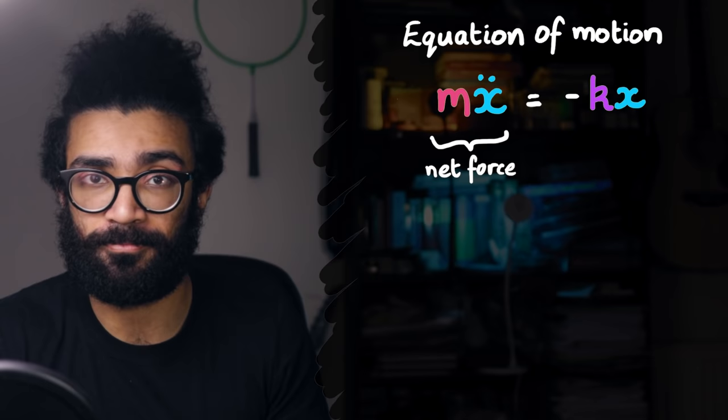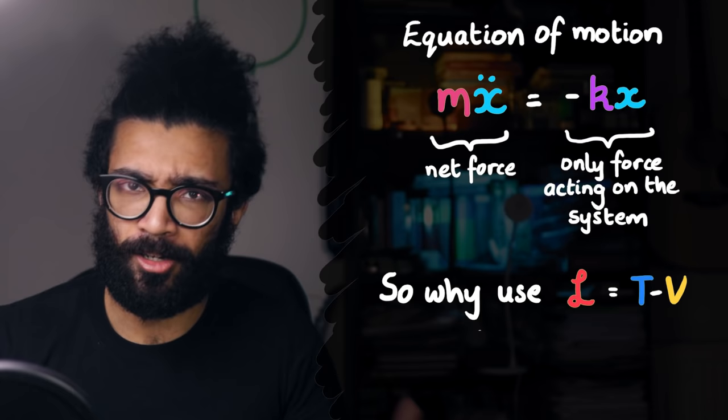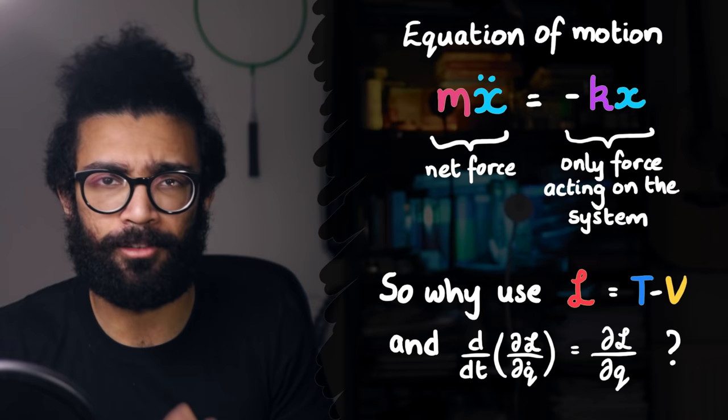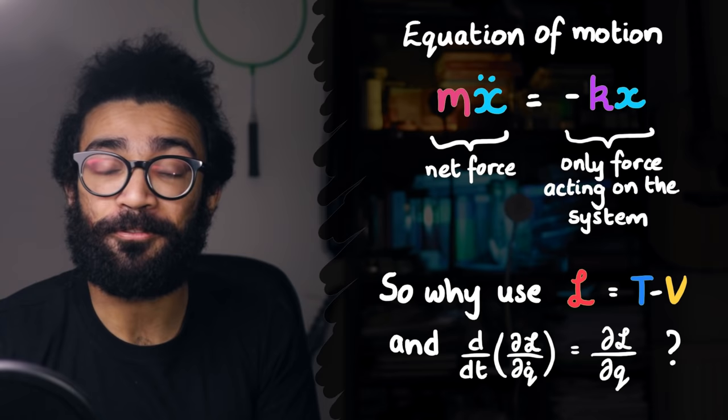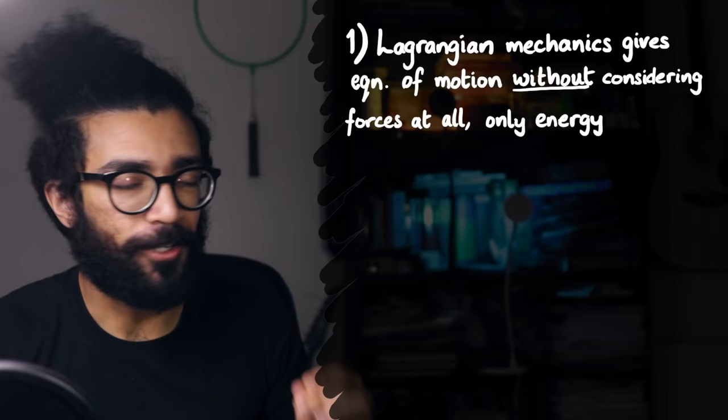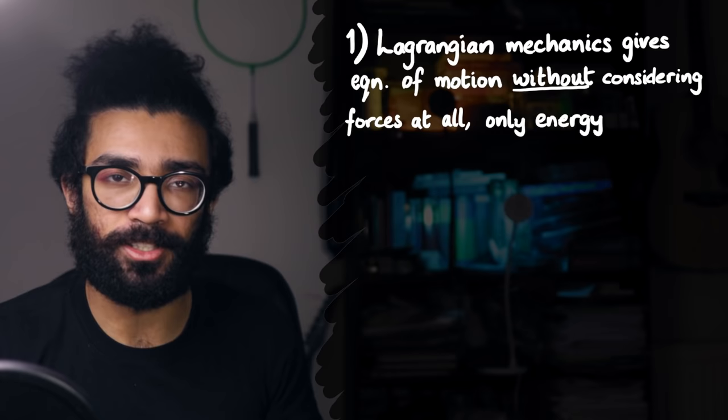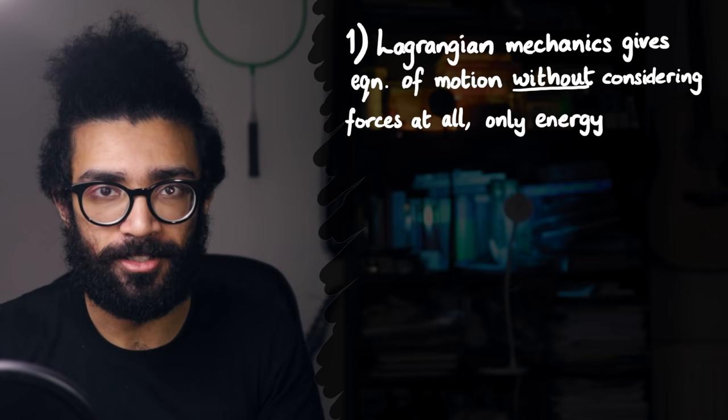So why did we go the long way around? Finding the Lagrangian, plugging it into the Euler Lagrange equation, dealing with lots of complicated calculus, and then arriving at something which we could have done very quickly if we'd considered forces. Well there's a few different reasons for this. Firstly, the Lagrangian method actually gives us the equation of motion without having to think about forces at all. We only need to consider energies. In some cases this is actually much more convenient and certainly is just another way of getting to the same result.